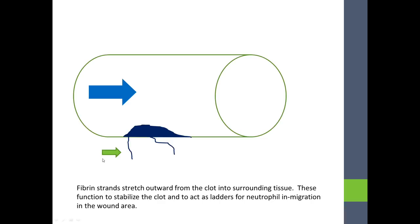The clot has fibrin strands which project out from the broken vessel into the surrounding tissue. These function to stabilize the clot and act as ladders for neutrophil in-migration into the wound area to facilitate wound healing.